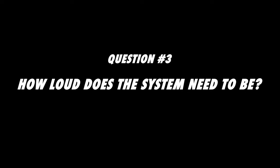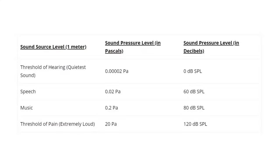The third question to ask is: how loud does the system need to be? If you know the location of the listeners, the location of the speakers, and you have a target level for the listening position, you're off to a great start. To give you an idea of what the target level should be, let's take a look at this chart. I usually aim for a music system target between 80 and 100 dB SPL at the listening position. Having that extra headroom is unnecessary in many situations, but I'll leave that up to you to decide.